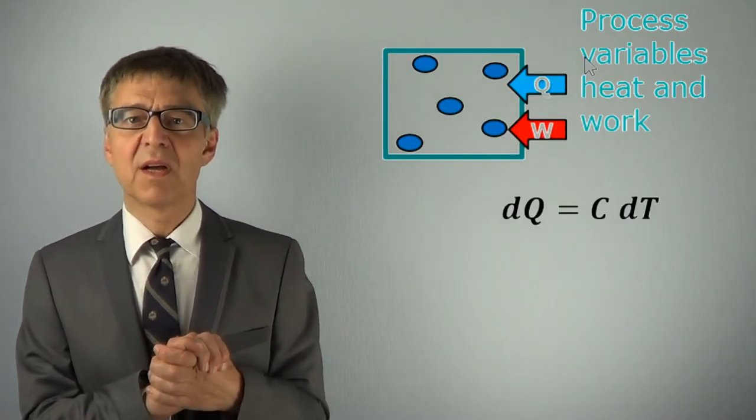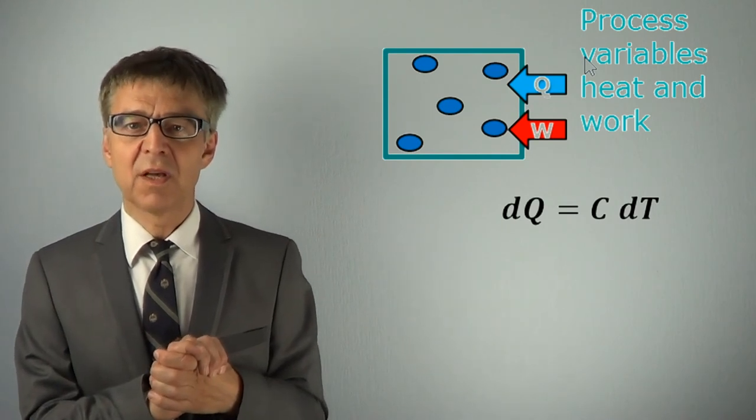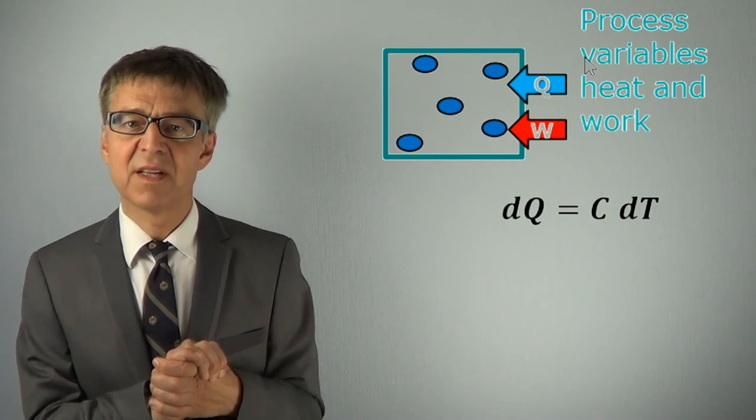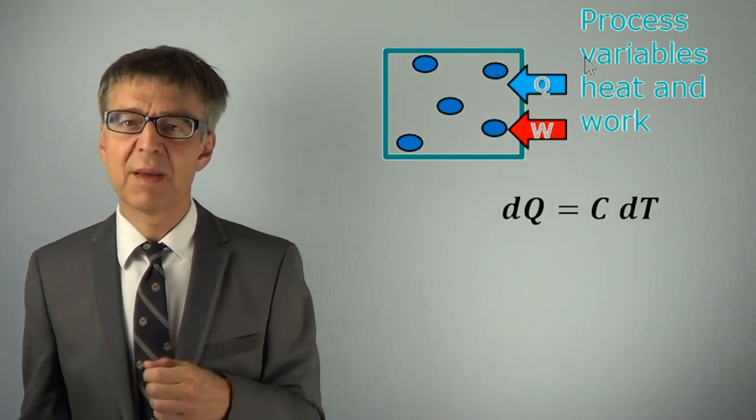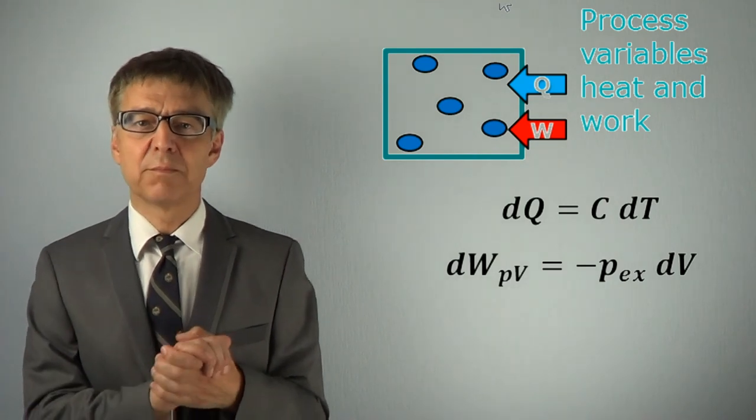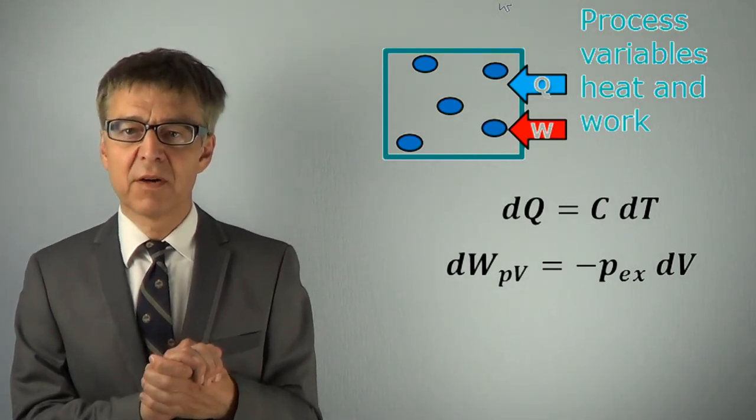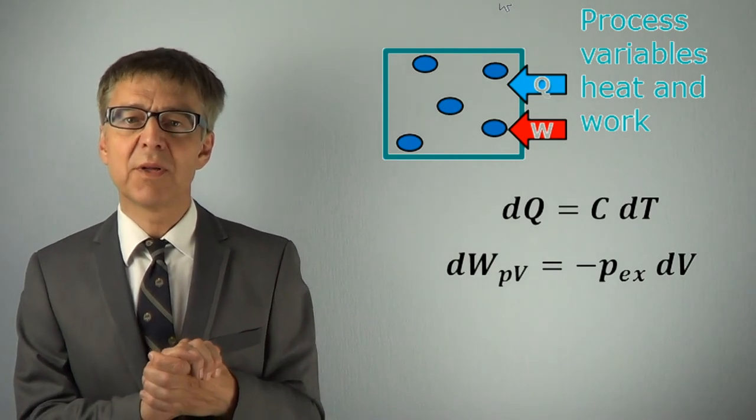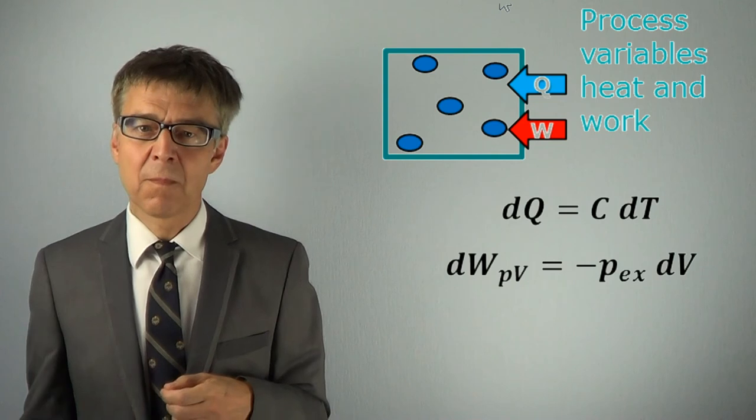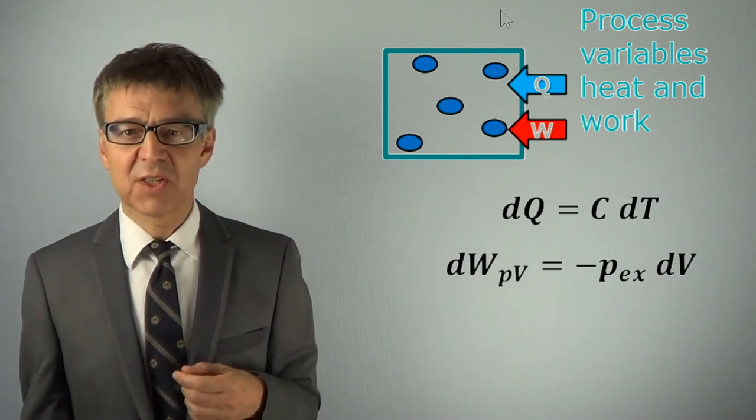Today's summary are merely two formulas. Heat can be calculated from temperature difference as dQ equals capital C times dT. And PV work can be calculated from volume change as dW equals minus P sub x dV. Thanks for watching. See you next time.